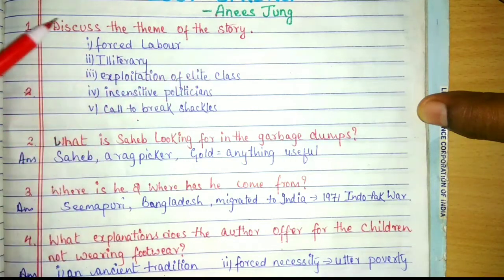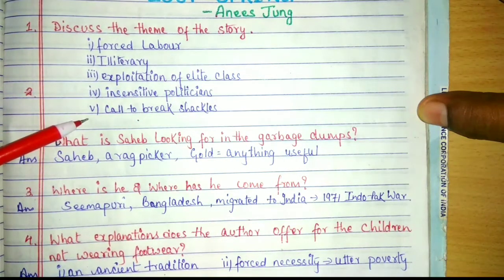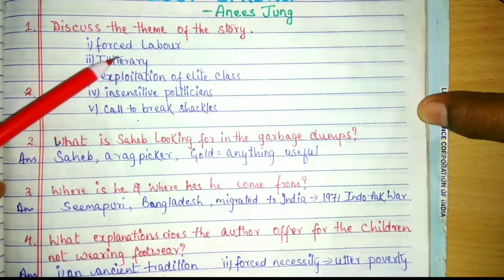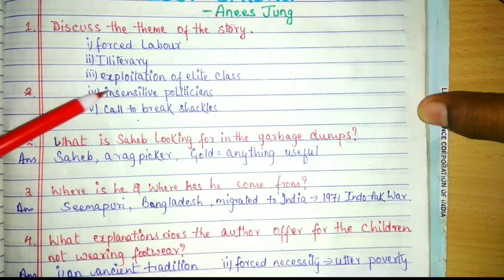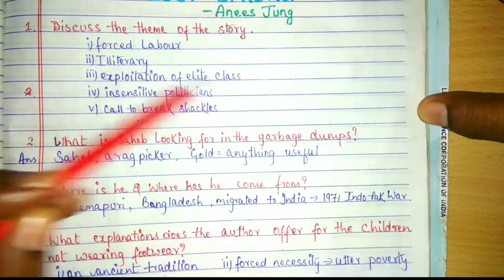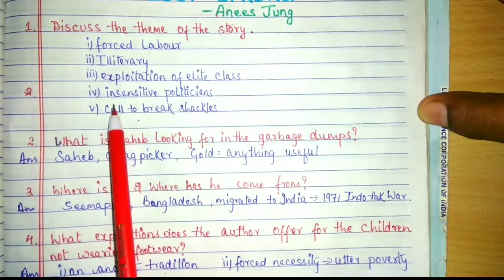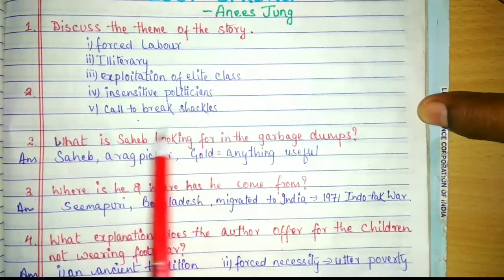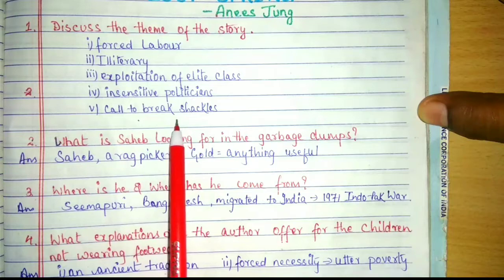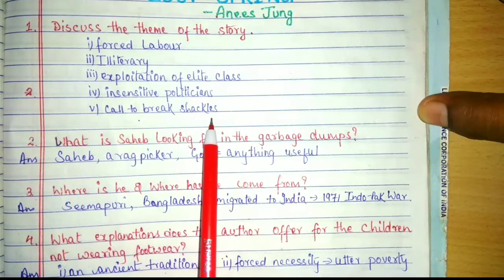Discuss the theme of the story. There are five themes which are discussed in the story: first is forced labor, illiteracy, exploitation of elite class, insensitive politicians, and call to break shackles.